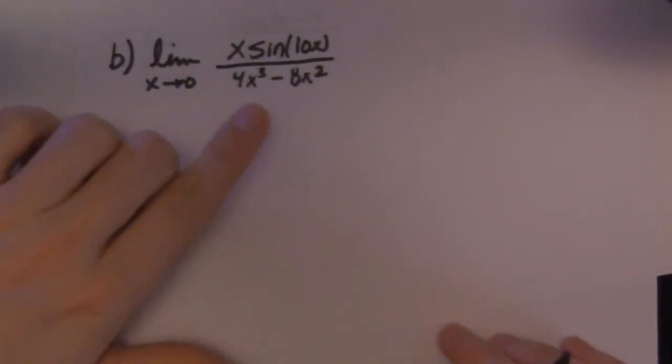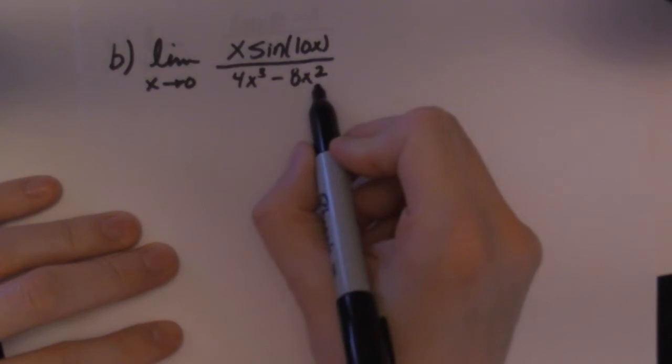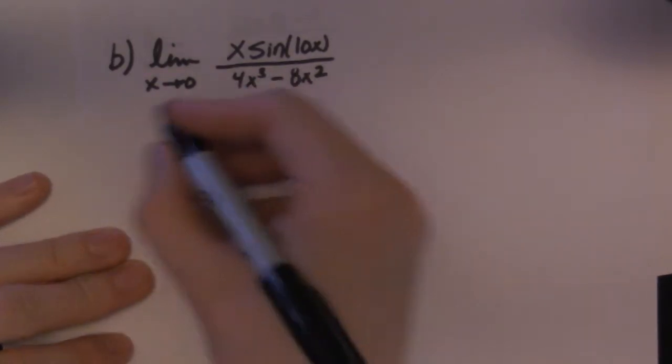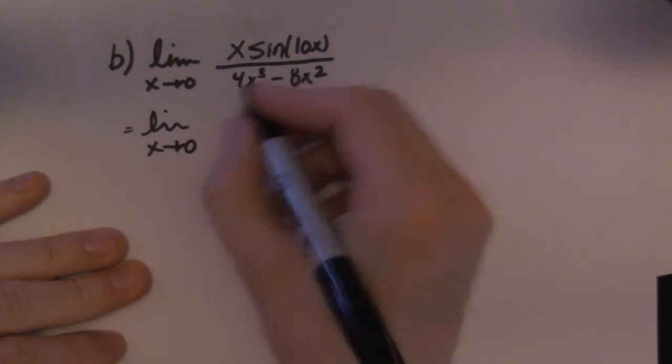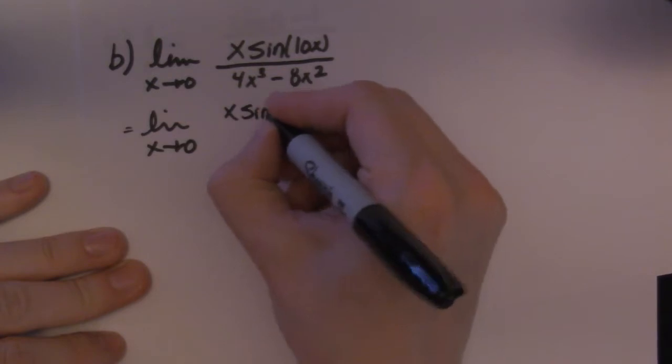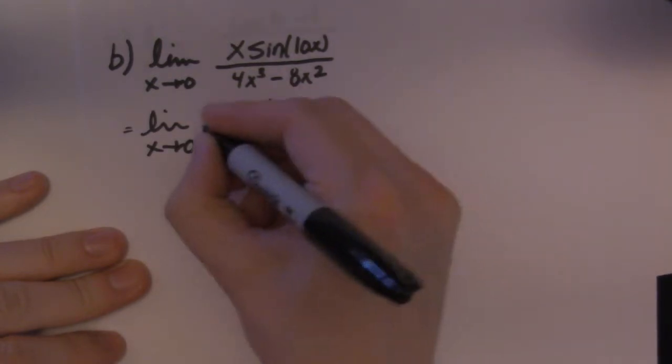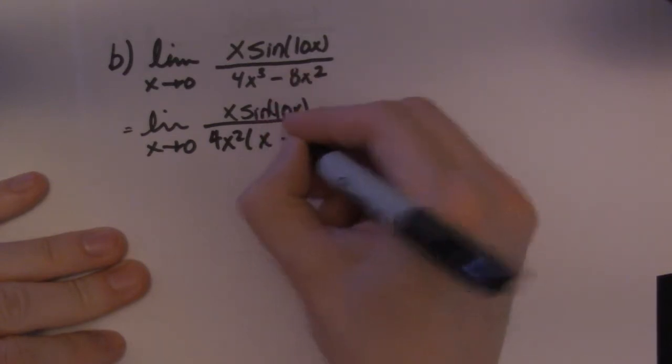Alright, so here's another example. So we have a polynomial on the bottom again. So we're going to go ahead and just straight up factor that guy. Anytime you see a polynomial you're going to be thinking I'm going to factor it. So I can take an x squared out and I can take a 4 out. So sine(10x) on top. It's rewritten. So I take a 4x squared. So that leaves me with x minus 2.